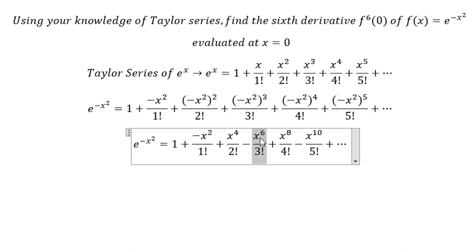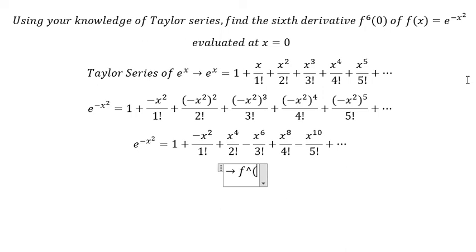If we do the sixth derivative of x to the power of 6, we have like this. This gives us negative 6 factorial over 3 factorial. If we simplify this number, we have negative 120. Now if we put 0 in here, it's still negative 120. That is the end, thank you for watching.